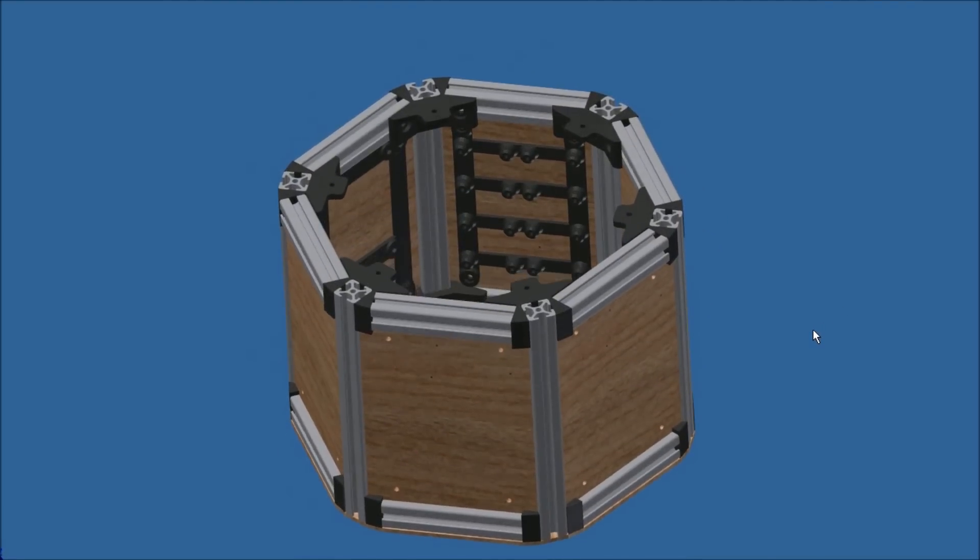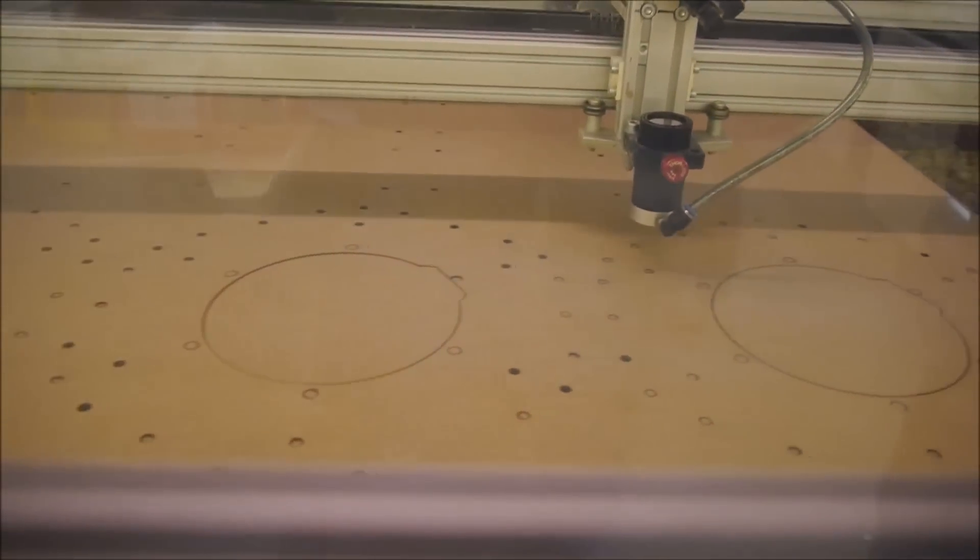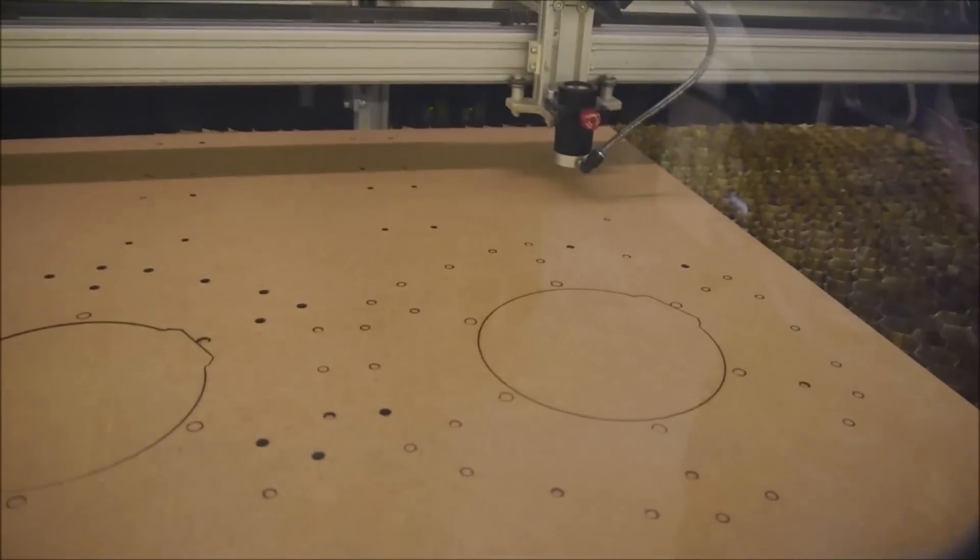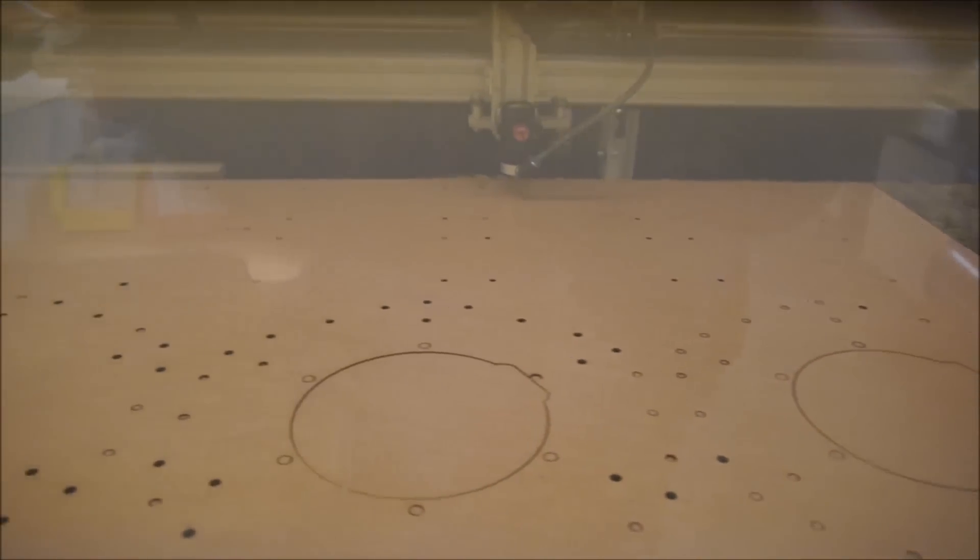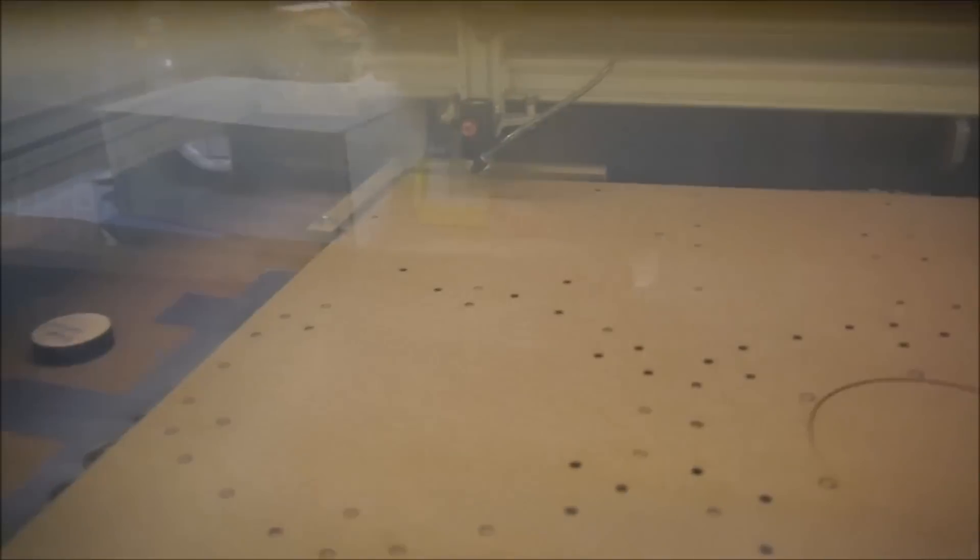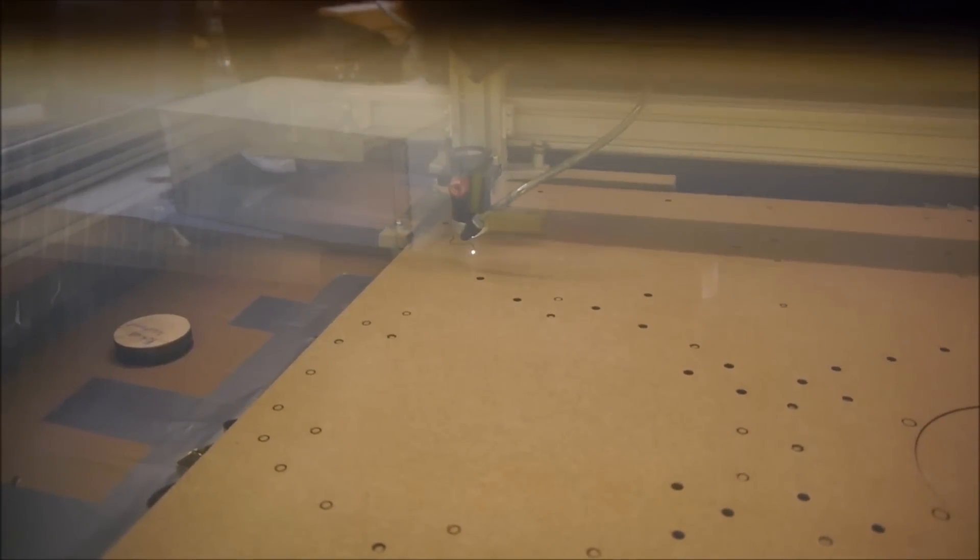So I'm actually in the fab lab Karlsruhe, which is an open lab or maker space. That's the laser cutter - it's a Lasersaur, which is an open source project for laser cutters. It is basically the first thing we built as a group project in the fab lab. It has a 100 watt CO2 laser.